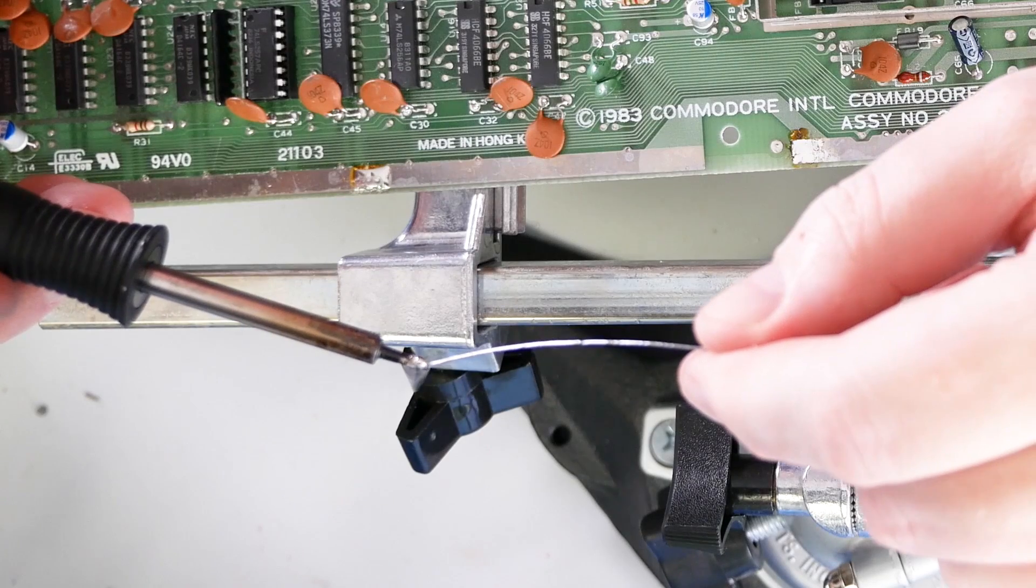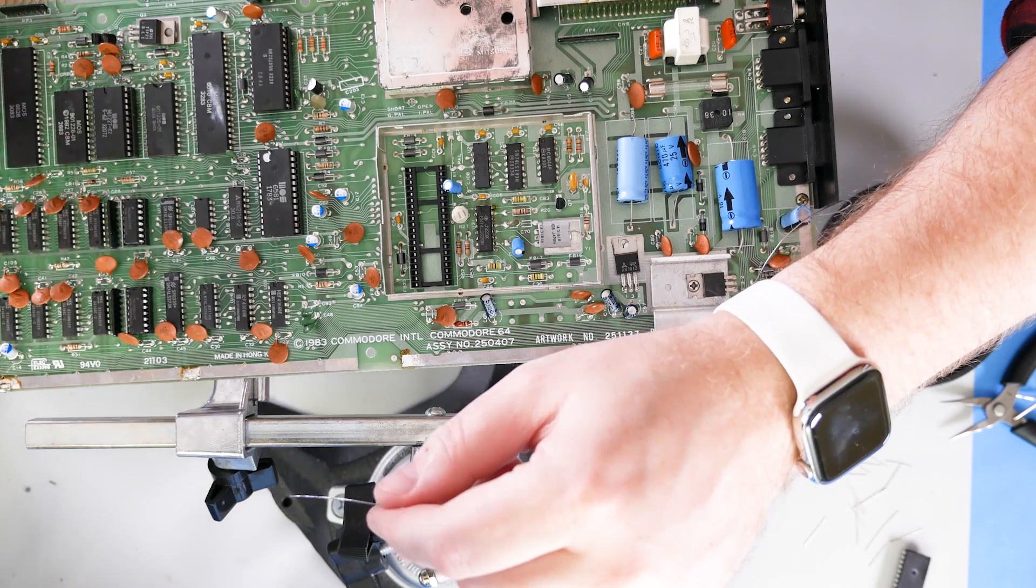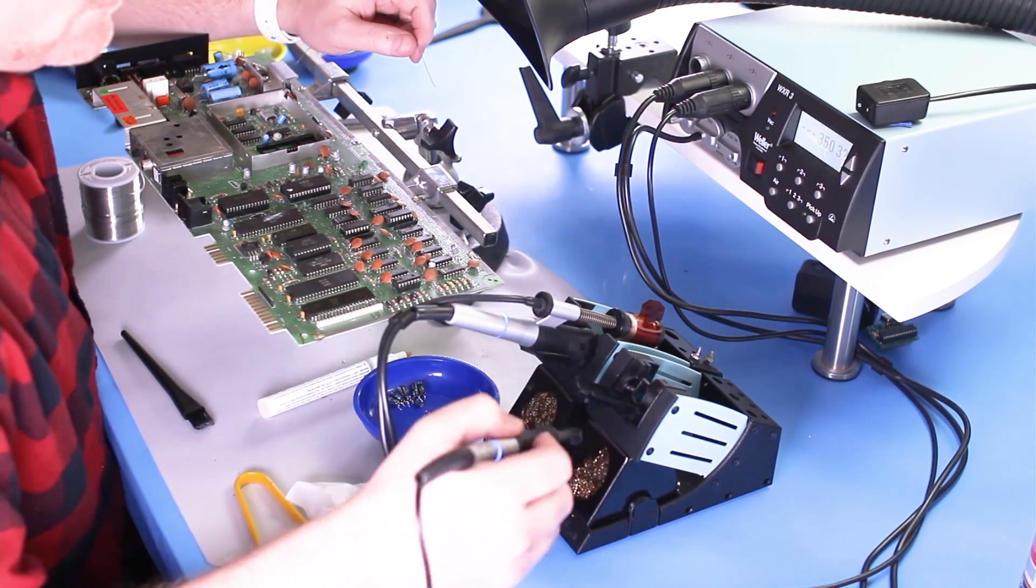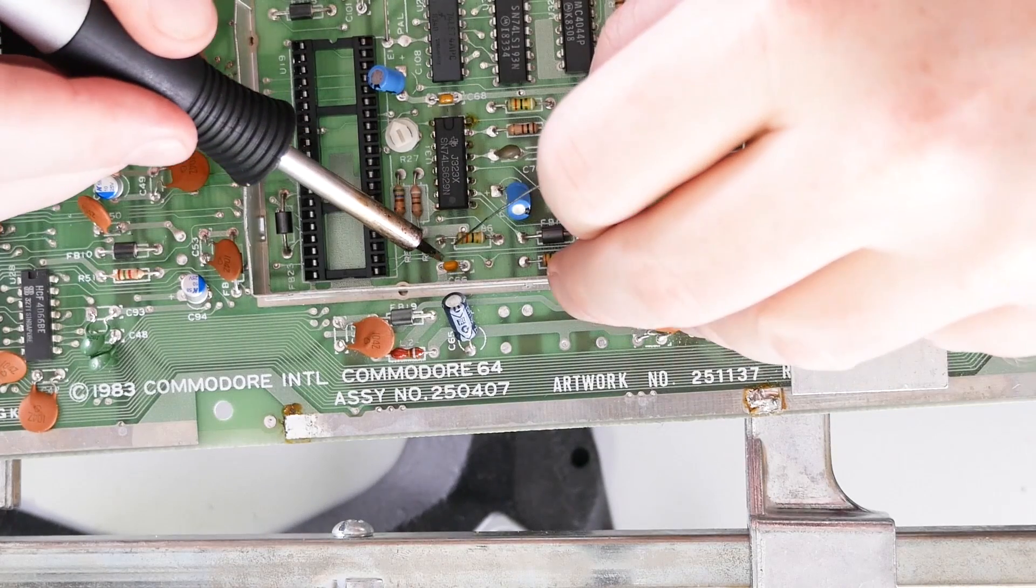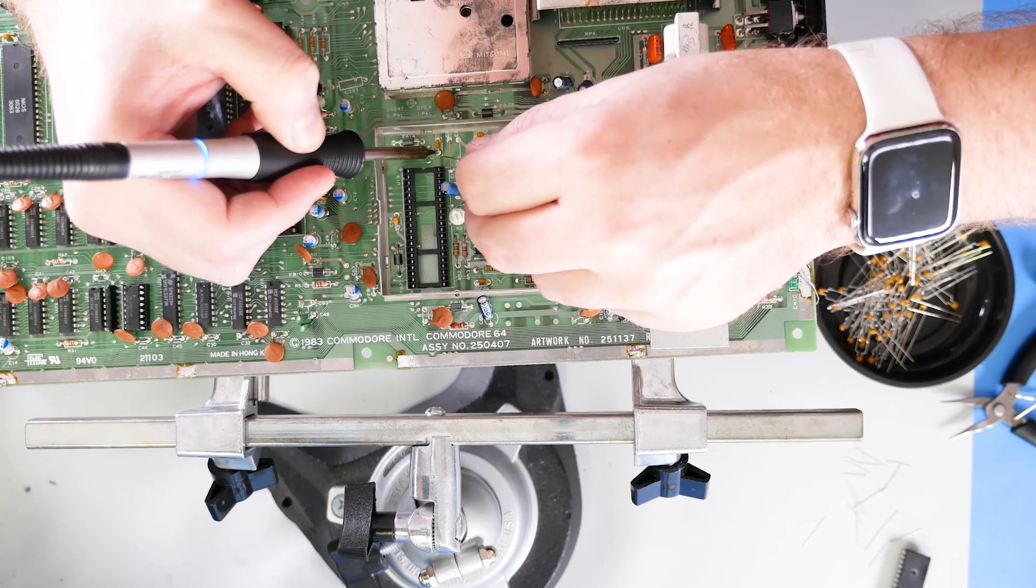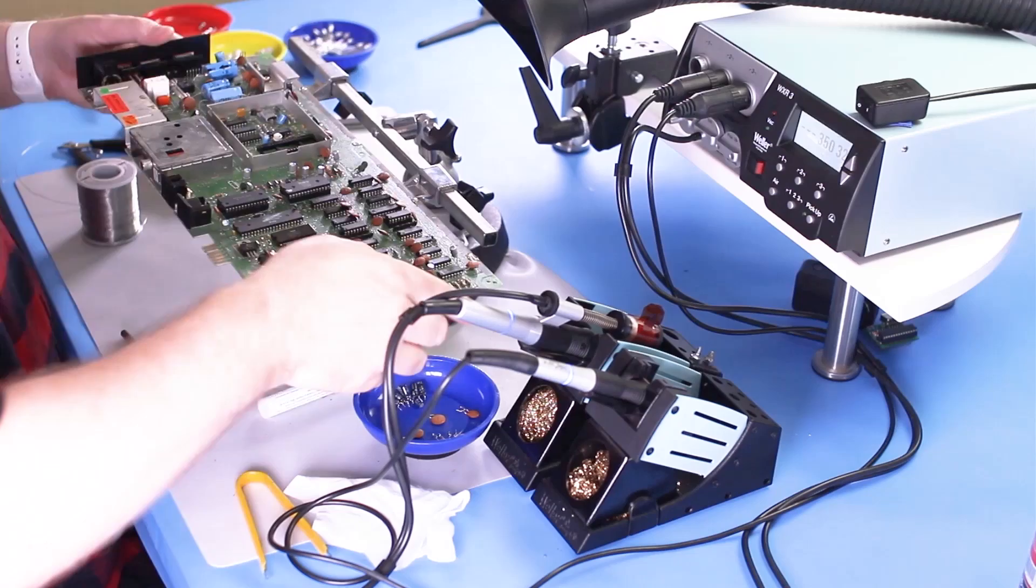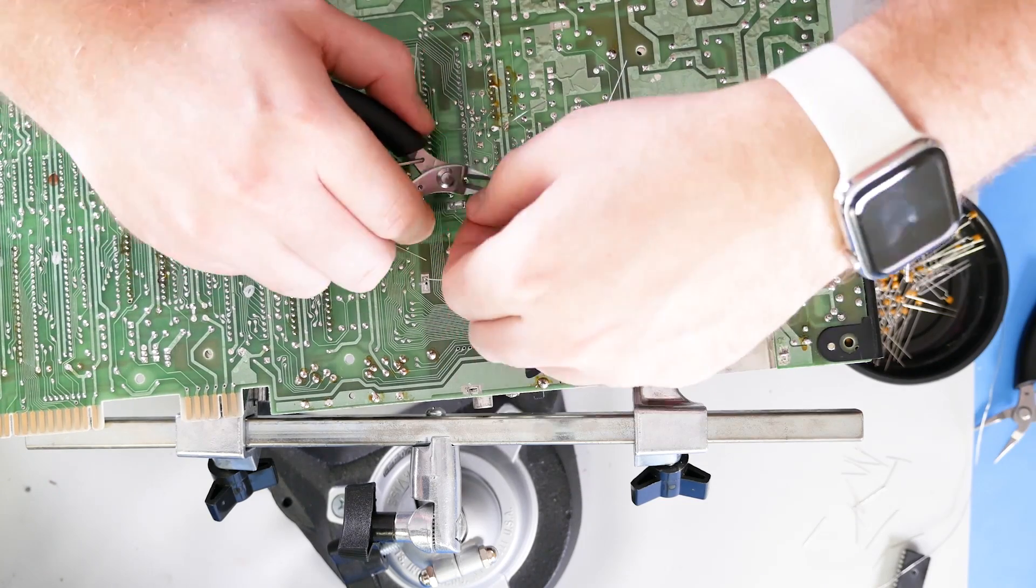For the capacitors, I switched to the WX65, which is a 65 watt iron. The smaller tip did require retinning almost every time I used it, but other than that, it worked great at getting into these tight spaces. The technique I used is that I soldered the top sides to secure the caps, then flipped the board over and finished the soldering. Afterwards, I just clipped off all the leads.